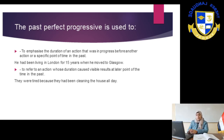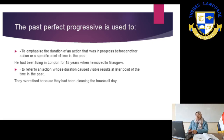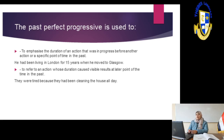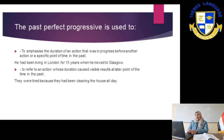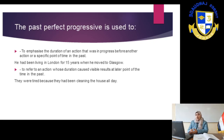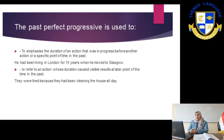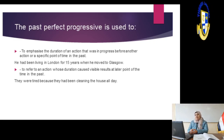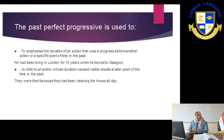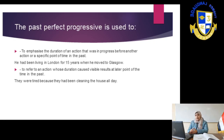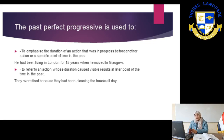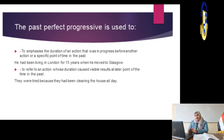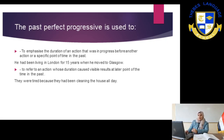We can also use the past perfect progressive to refer to an action whose duration caused visible, obvious results. For example: They were tired because they had been cleaning the house all day. Both actions happened in the past. The result is clear — they were tired — and the action causing it is: they had been cleaning. 'All day' is a keyword for the past perfect progressive.